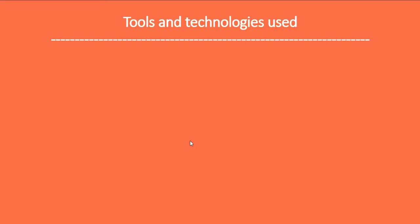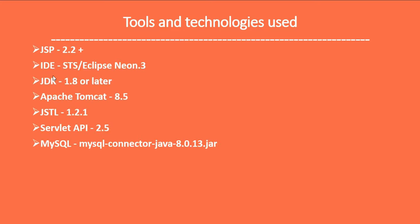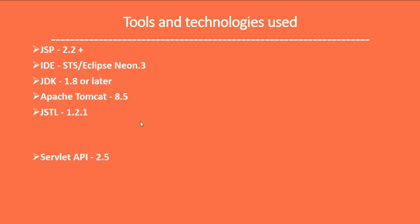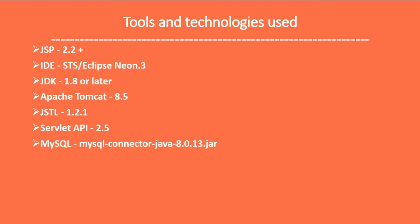Let's look at the tools and technologies we'll be using. We use JSP, Eclipse IDE, and JDK 1.8 or later. Next, we use Apache Tomcat 8.5 to deploy our web application. We also use a Servlet and a MySQL Connector Java JDBC driver to connect to the MySQL database using the JDBC API.